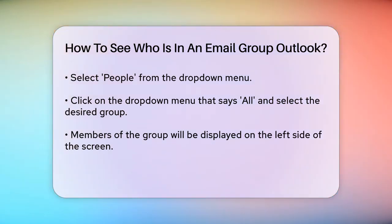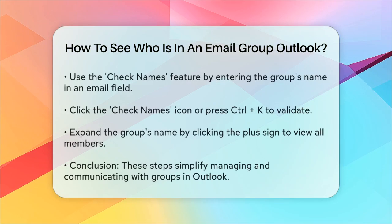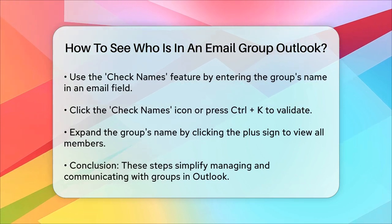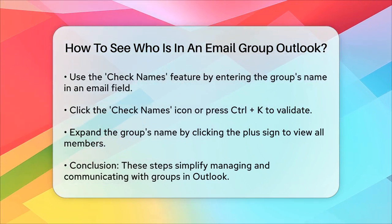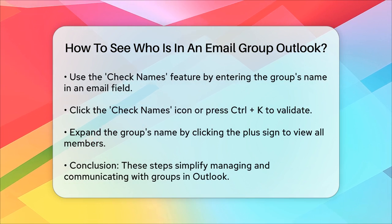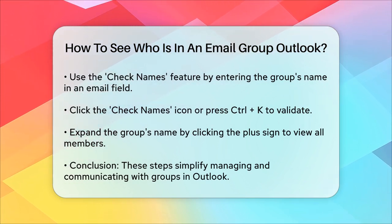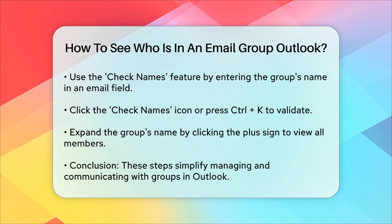Another way to view the members of a distribution list is by using the Check Names feature. Enter the group's name into the To, CC, or BCC field of an email. Click on the Check Names icon or press Control-K to validate the group's name. Then, click the plus sign next to the group's name to expand it and see all the members listed.